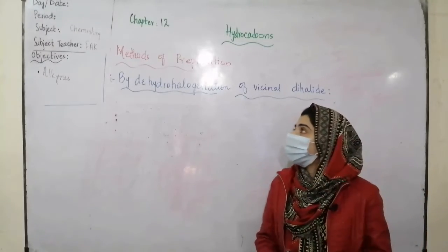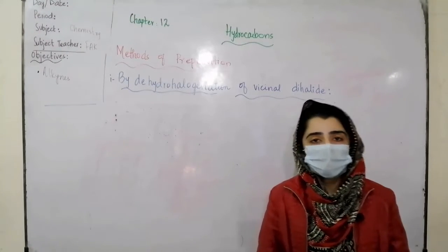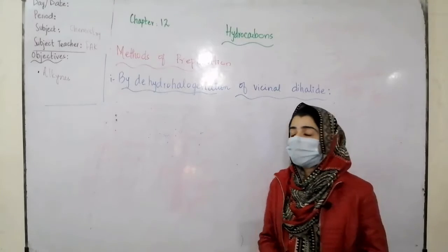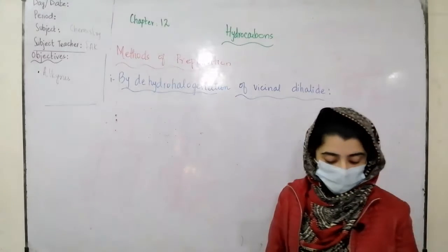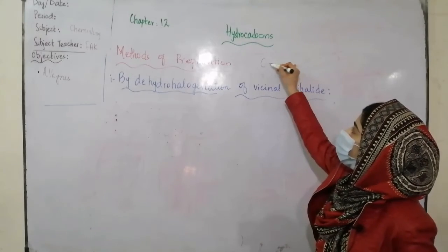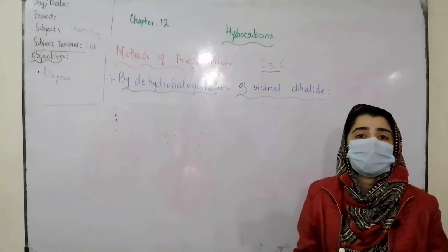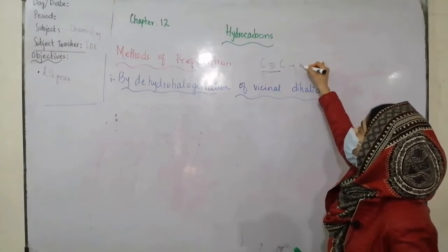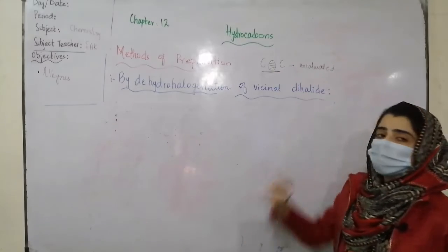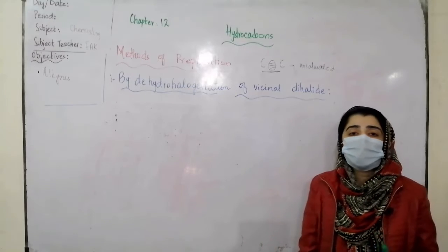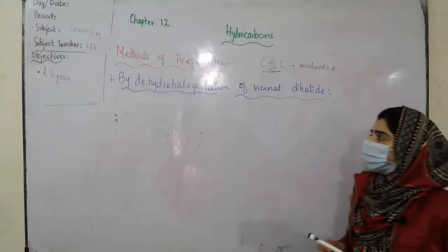Today the topic of our discussion is the method of preparation for alkynes. We have also studied alkanes and alkenes methods of preparation. Today we are going to start with alkynes. Alkynes is an unsaturated class of organic compounds — there exists a triple bond between carbon to carbon atoms. These triple bonds are responsible for causing unsaturation in the organic compound. We will directly jump towards the method of preparation for alkynes.